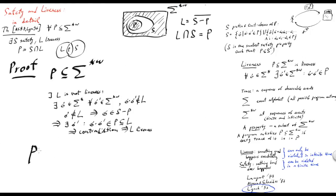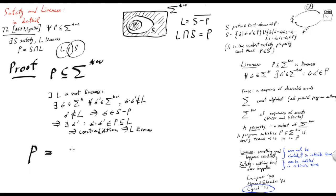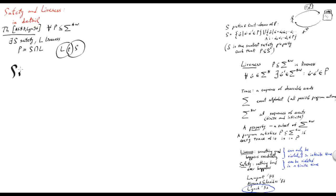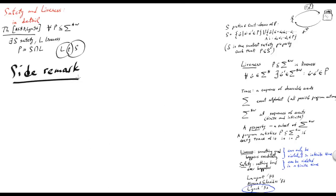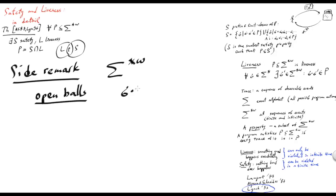So to summarize, we have shown that any property — whatever set of traces we take — can be represented as an intersection of a safety property and a liveness property. As a side remark, we can actually define a topology on the set of traces. If we consider the set of traces sigma-star union omega — the set of all finite and infinite traces — we can define open balls on this topology as the set of all traces with a common prefix.